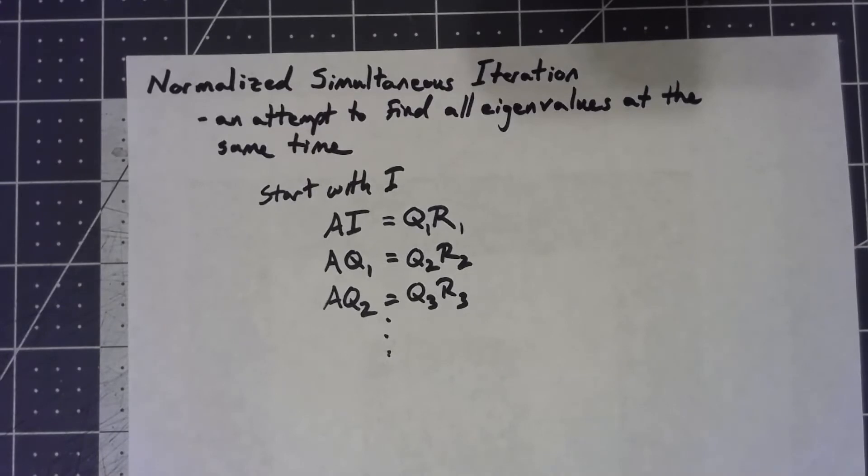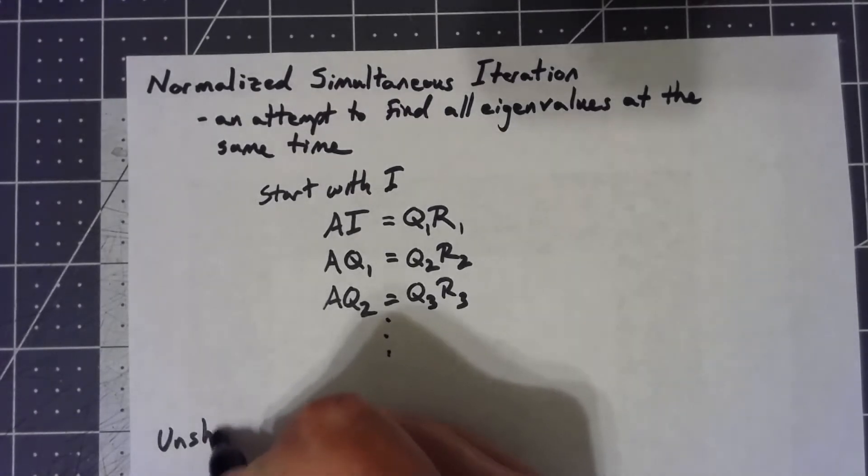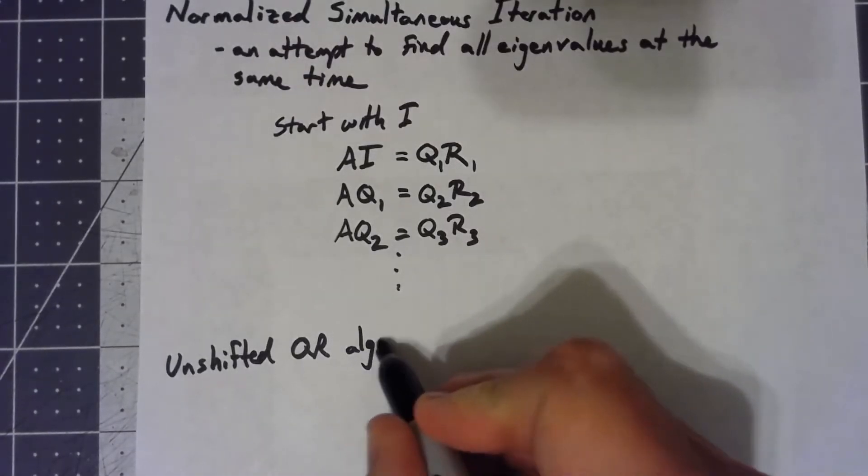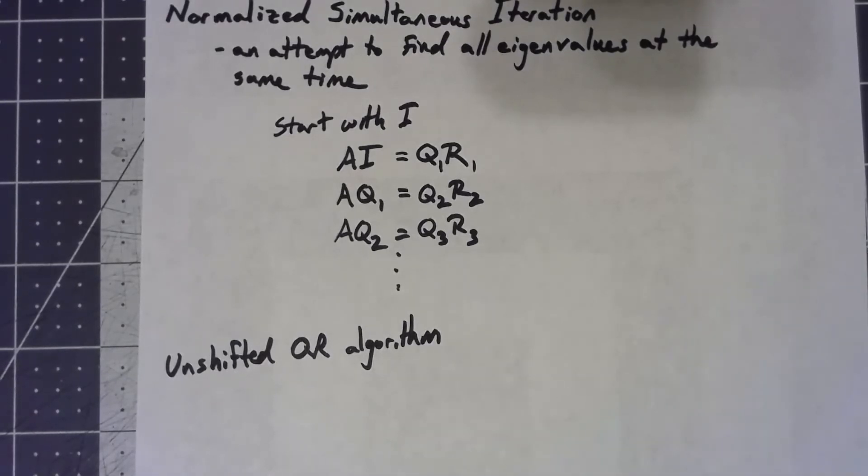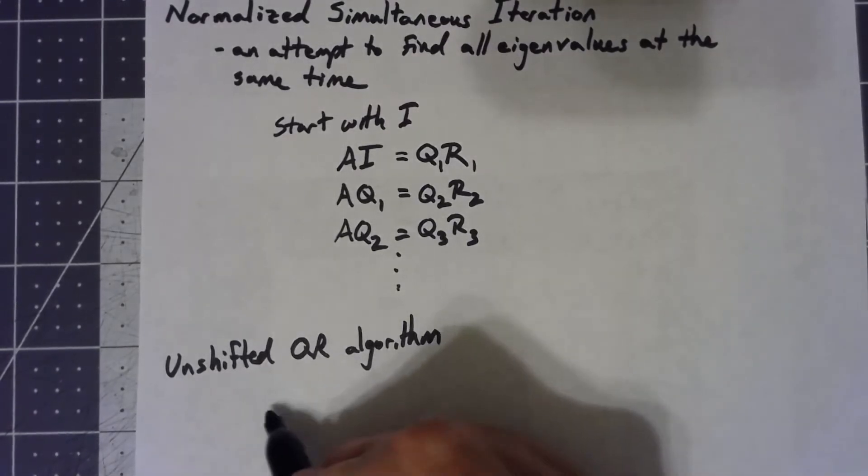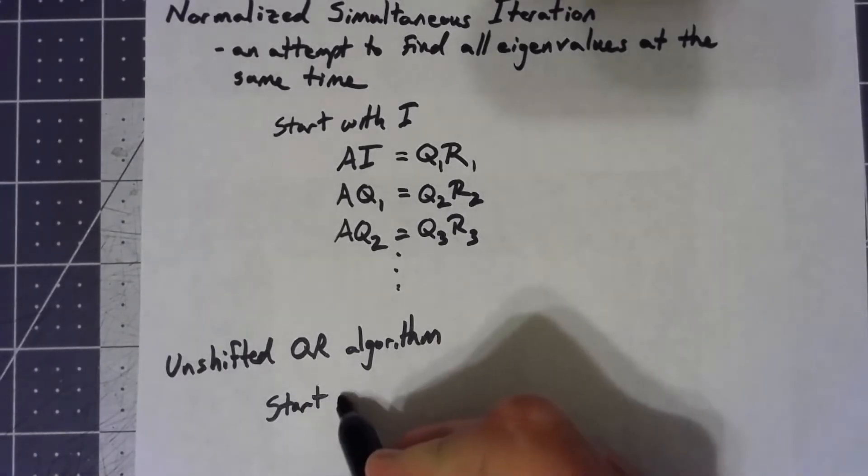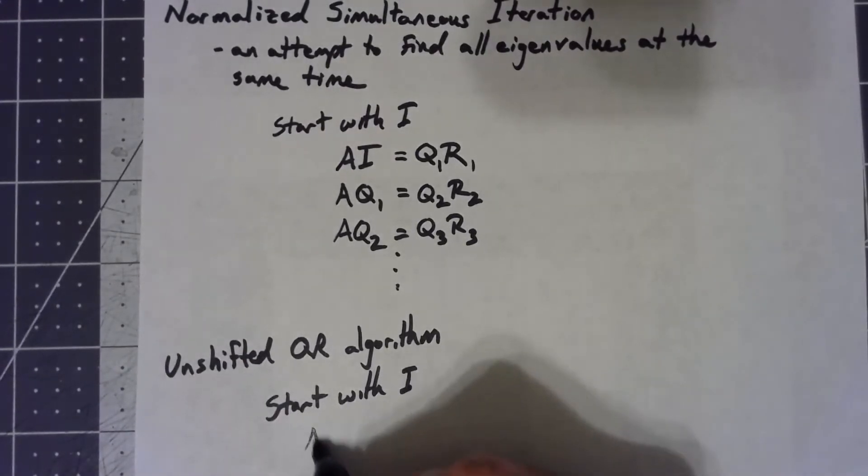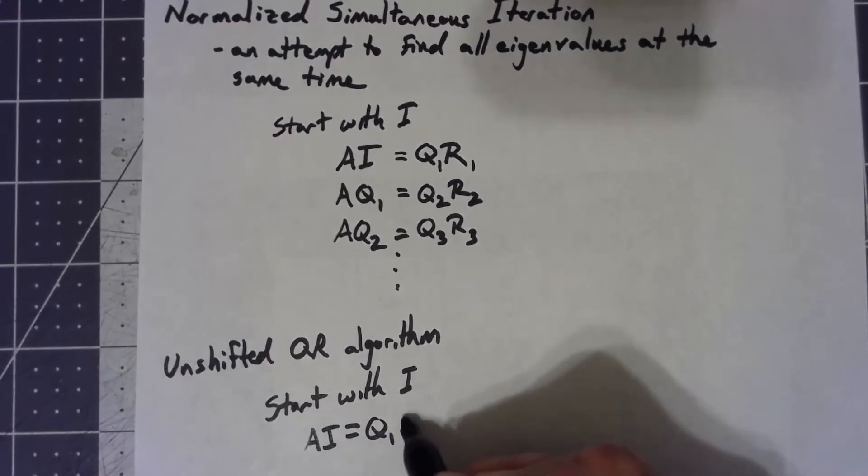We can improve this a little bit by changing it to something we call the unshifted QR algorithm. It's very similar. I'm going to start with I, start with the identity, and the first step is going to be exactly the same. I'm going to take A times I, we're going to factor that as a QR.